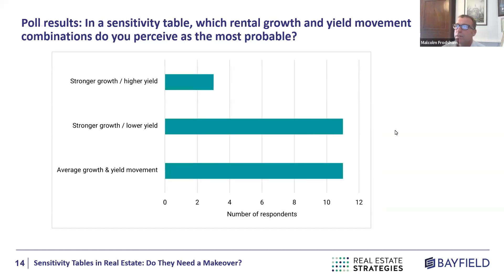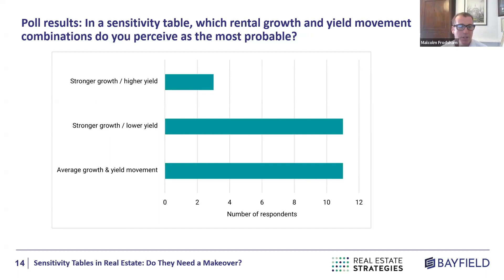We also asked about this on LinkedIn. The most popular answer was that stronger growth and lower yield — good outcomes — are more likely to occur together. We're seeing today yields rise alongside very weak rental growth, and you could counter that industrials have very strong rental growth but yields are moving out. That's why it's important to recognise these combinations are less likely but not impossible.